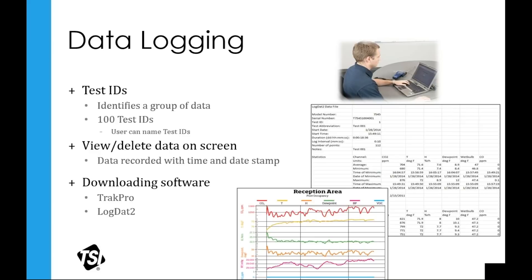IEQ probes are diagnostic probes — if you have issues with temperature, humidity, or CO2 levels being too high or too low, they're used as a diagnostic tool to go back and see what's causing it. If there's a VOC (volatile organic compound) issue, you can either minimize the source, eliminate the source, or use extraction to remove the fumes. The other parameters indicate thermal comfort and ventilation efficiency.